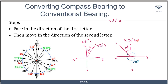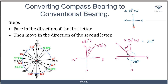To convert North 50 degrees West to conventional bearing: the conventional bearing is always measured from north in the clockwise direction. So I need to find the equivalent clockwise angle. Since the full cycle is 360 degrees, the angle is 360 minus 50, which equals 310 degrees. So North 50 degrees West is the same as a conventional bearing of 310 degrees. Now let's look at South 30 degrees West. I draw my four cardinal points and face the direction of the first letter — south.